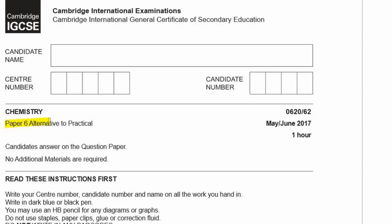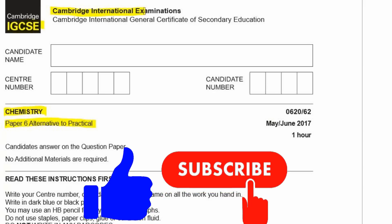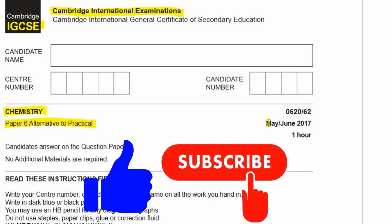Okay, let's go through Paper 6, which is the alternative to the practical for chemistry. This is from IGCSE, from Cambridge International Examination, CIE, May-June 2017, and the code is 0620-62. Alright, let's get started.